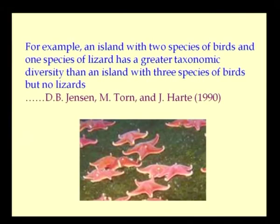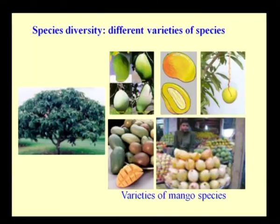For example, an island with two species of birds and one species of lizard has greater taxonomic diversity than an island with three species of birds but no lizards. The first is more diverse because it includes additional taxonomic groups. This is how we look at species diversity. For instance, mango (Mangifera indica) has different varieties — you call it Alphonso, Banganapali — so you have different species within the same plant.